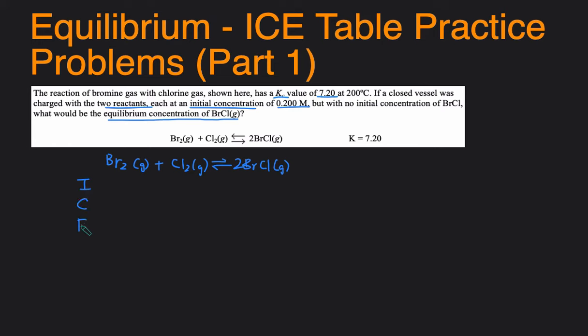If you're unfamiliar with what an ICE table is, I stands for initial, C stands for change, and E stands for equilibrium. This is a good way to allow you to keep track of what you started with and what you end with at equilibrium.